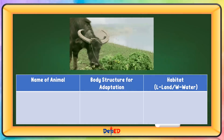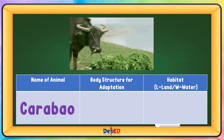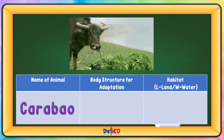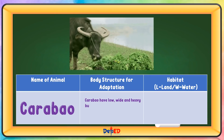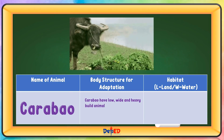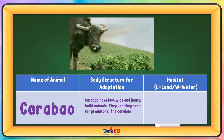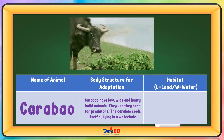Name of animal: Carabao. Body structure for adaptation: Carabao have low, wide, and heavy-built bodies. They use their horns for protection from predators. The carabao cools itself by lying in a waterhole. Habitat: Land.